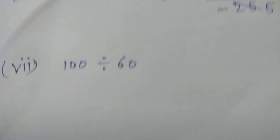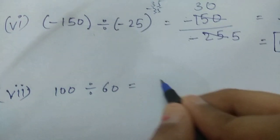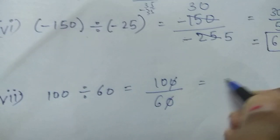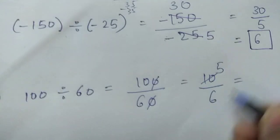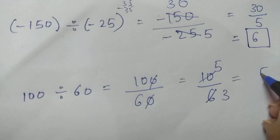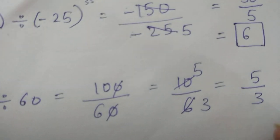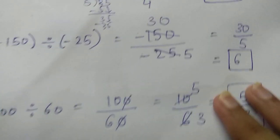Last sum for the day. 100 divided by 60. Oh, we did this for our example. 0, 0 cut. 10 by 6. 2, 5's are. 2, 3's are. Again, positive, positive. Answer is positive. Next sum, we'll solve in next class.